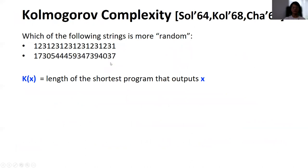Let us introduce the notion of Kolmogorov complexity. Given two strings — the first is like 1, 2, 3, 1, 2, 3, and so on (a structured repeating sequence), and the second looks random — the question is: which of the above strings is more random? The notion of Kolmogorov complexity, proposed by Kolmogorov in 1968, is used to measure the amount of randomness in a fixed string.